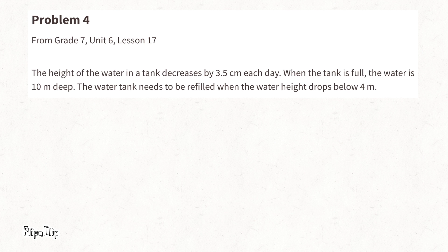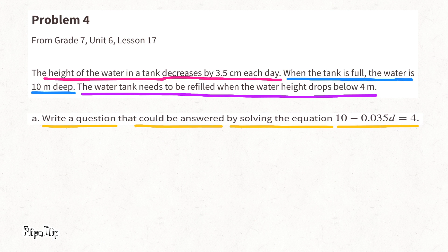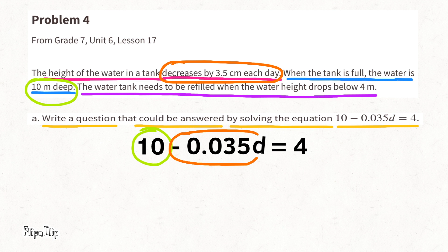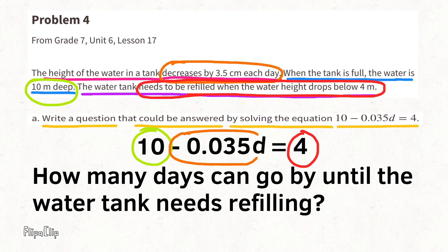Problem 4 (from Grade 7, Unit 6, Lesson 17): The height of water in a tank decreases by 3.5 centimeters each day. When full, the water is 10 meters deep; it needs refilling when the water height drops below 4 meters. Part A: Write a question answered by solving 10 − 0.035 × d = 4. A basic question would be: how many days can go by until the water tank needs refilling?